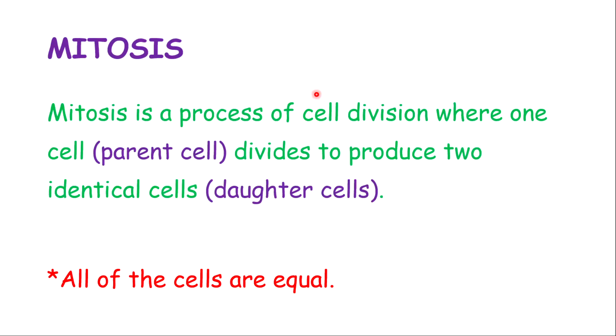Mitosis is a process of cell division where one cell, which is called a parent cell, divides to produce two identical cells, which are called daughter cells. Very important to note is that all the cells are equal in terms of the number of chromosomes. The parent cell will be equal to the daughter cells, and the daughter cells will also be equal to each other.